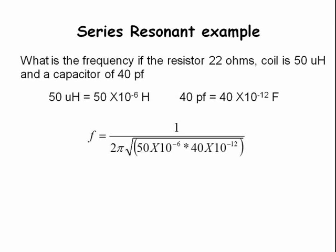The resonant frequency will equal 1 divided by 2π times the square root of 50 times 10 to the minus 6 times 40 times 10 to the minus 12.